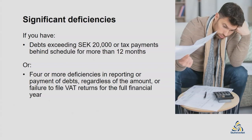The Swedish Tax Agency can withdraw your F-tax approval on the grounds of irregularities in reporting or payment of taxes or other charges in Sweden, if the irregularities are significant. What is a significant irregularity? For example, if you have a debt exceeding 20,000 Swedish kronor, or if your tax payments have been behind schedule for more than 12 months in a row. It is also significant if there have been four or more irregularities in your reporting or payment of these debts, regardless of the amount involved, or if you have not filed VAT returns for the full financial year.